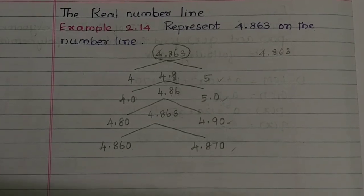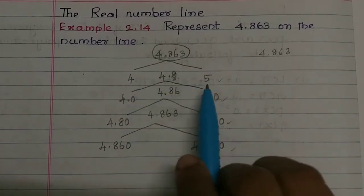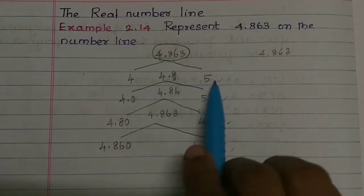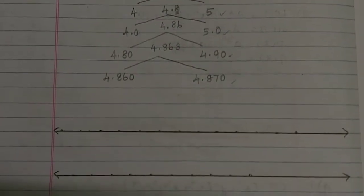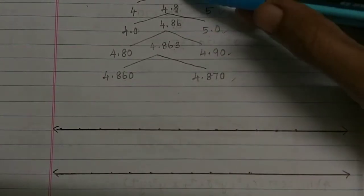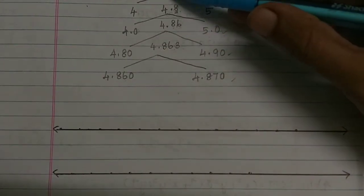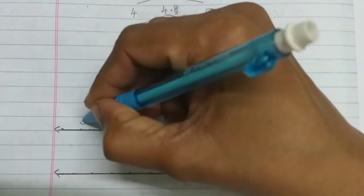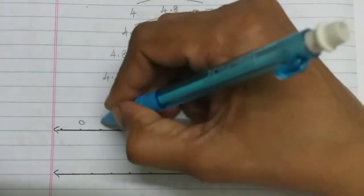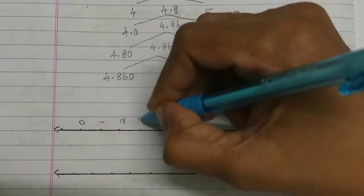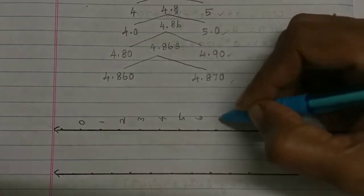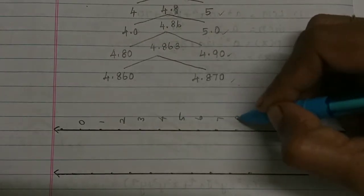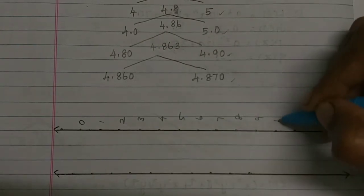So it's very easy to get 5 marks in this sum. How do you note this number line? Now you have 4 and 5. So how do you mark this number? This is a whole number. I will mark 0, 1, 2, 3, 4, 5, 6, 7, 8, 9, 10.